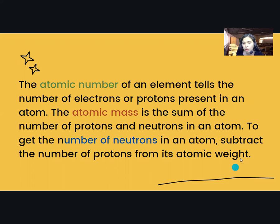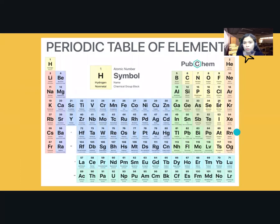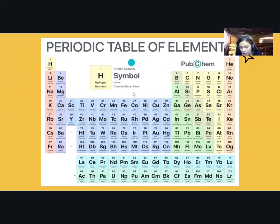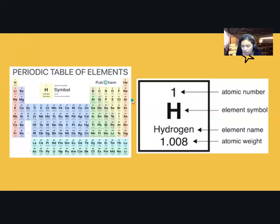I want to introduce to you the periodic table of elements. All of the known elements are organized into a table called the periodic table of elements. Each box on the periodic table represents an element organized according to its atomic number and atomic mass. Each element is represented by a number, a letter, or letters, which is its atomic symbol.